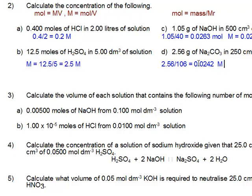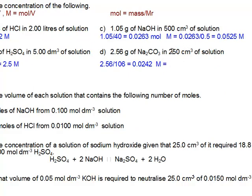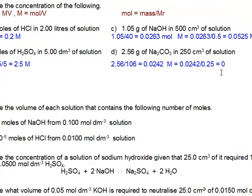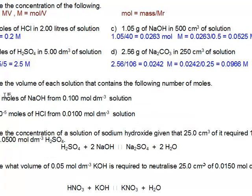And we're told it's in 0.25 litres. So it's 0.0242 divided by 0.25. And what we do, just divide our number in the calculator by 0.25, and this gives me 0.0966. 0.0966 molar. Alright, we'll go on to question 3 in the next video.